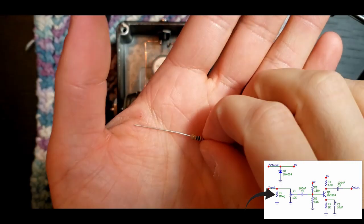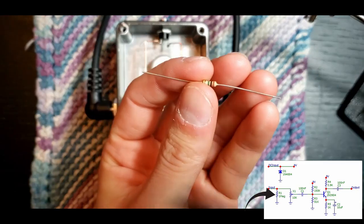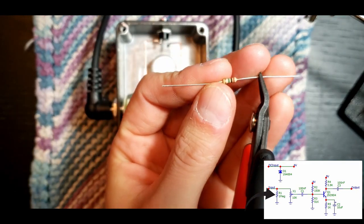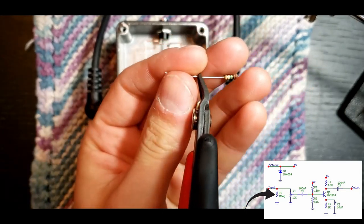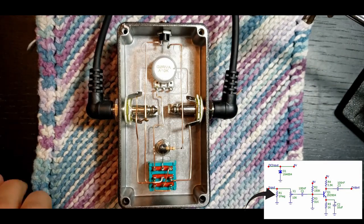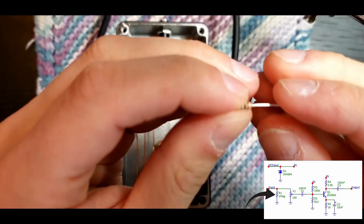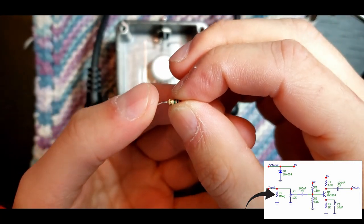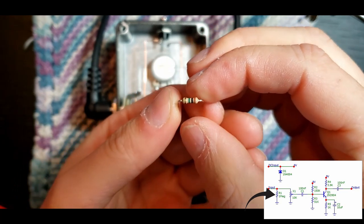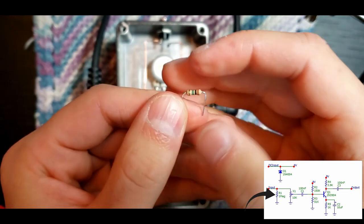Up next we have R1 and what you're going to do is trim the leads about halfway. Like R6 it doesn't have to be perfect. And then you're going to bend both leads downwards. We're going to trim these again later.